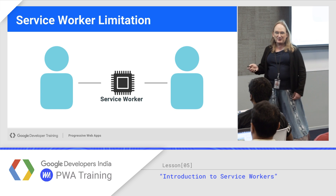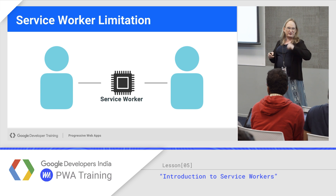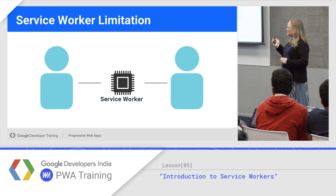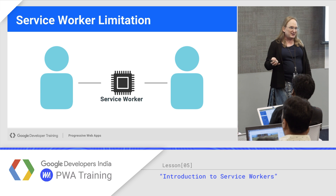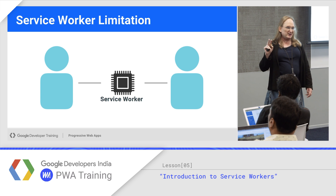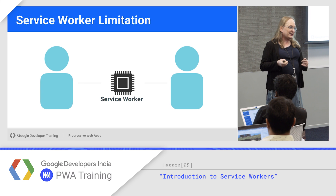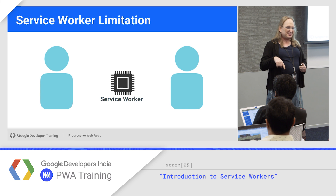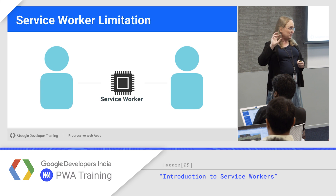Service workers must be served over HTTPS. You cannot serve them insecurely except in two conditions: one is running on localhost, which is a developer hack, and the other is a Chrome flag that lets you disable it — but that's not something you tell your users. That's for testing when you don't have HTTPS but need to test a different domain.